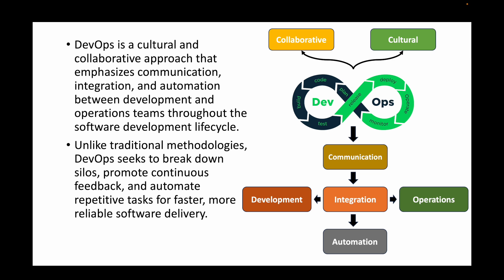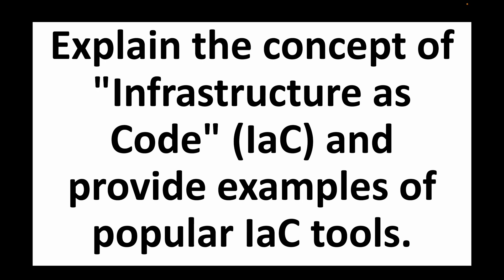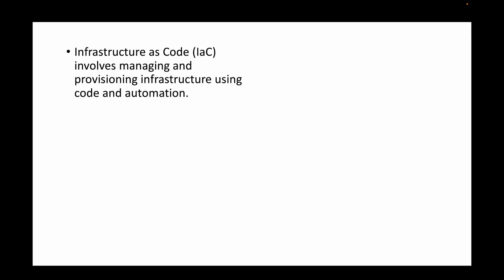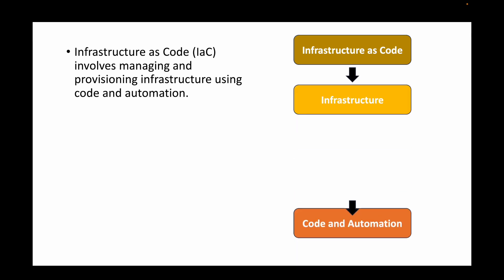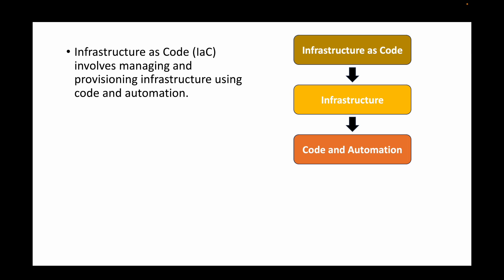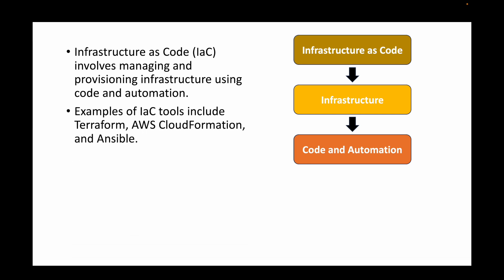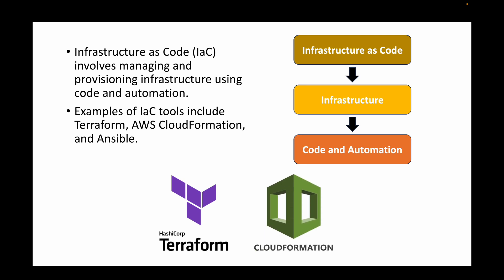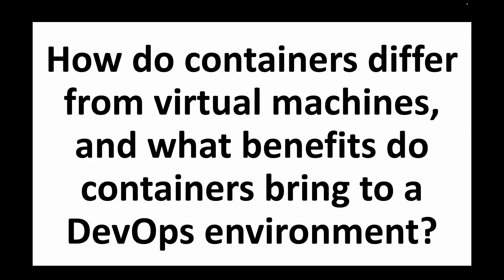The next question is: explain the concept of infrastructure as code and provide examples of popular IaC tools. Infrastructure as code is simply setting up and managing your infrastructure by making use of code or automation. Instead of setting up infrastructure manually, we write code and when we execute it, that sets up the infrastructure for us. Examples of IaC tools include Terraform, AWS CloudFormation, and Ansible.